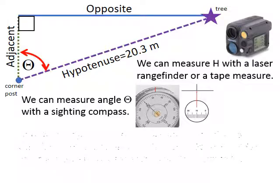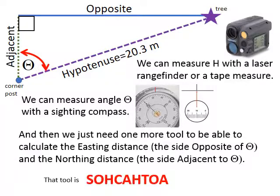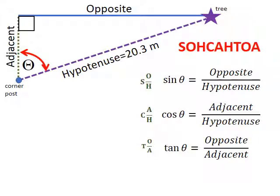We then need one more tool, an analytical tool, to calculate the east and north coordinates. That is, the easting distance, which is the side opposite of the angle theta, and the northing distance, which is the side adjacent to theta. That tool is the immortal SOHCAHTOA. Yes, trigonometry is useful after all. Let's remember SOHCAHTOA. This stands for sine of theta equals the opposite over the hypotenuse. That's S equals O over H. Cosine of theta equals adjacent over hypotenuse. C equals A over H. And tangent of theta equals opposite over adjacent. So just with theta and the hypotenuse, we can use sine and cosine to calculate the opposite and adjacent legs of the triangle, which are the east and north coordinates of the tree.